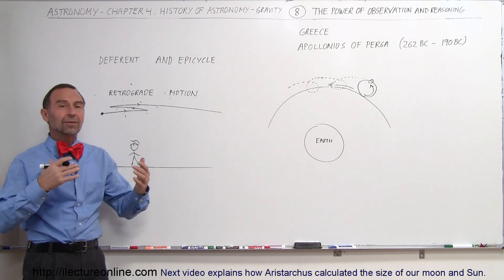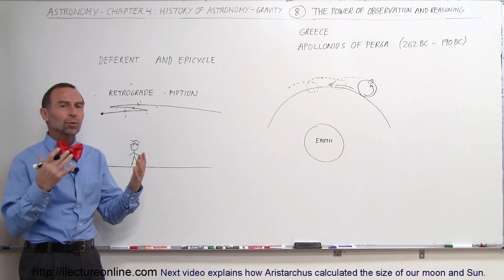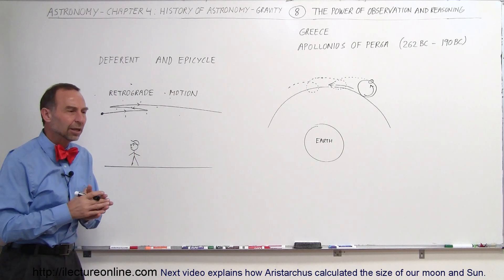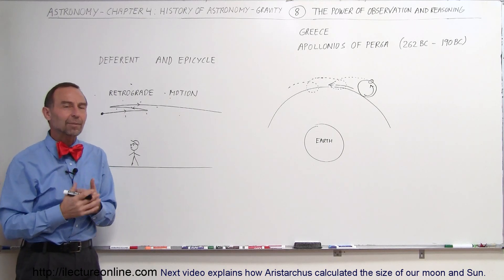We also knew that the sky was always changing, or the heavens were always changing. Different constellations would appear during different times of the year, and of course, things would change on a nightly basis as well.